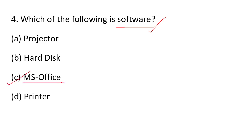Projector, hard disk, and printer are hardware because they are physical parts of the computer. Software is intangible. There is application software, system software, and utility software. Antivirus is utility software. MS Office is application software.